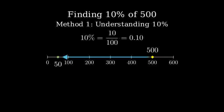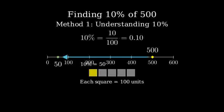Let's try another way to understand this. Imagine 500 squares. 10% means we want to highlight one out of every 10 squares.